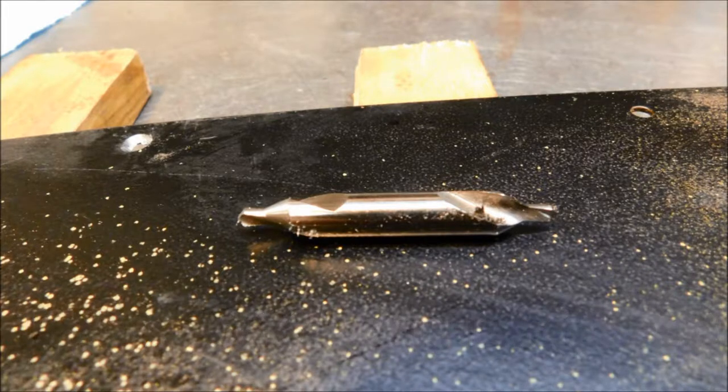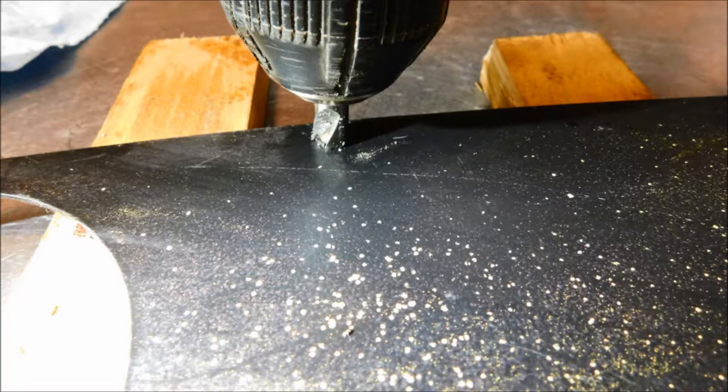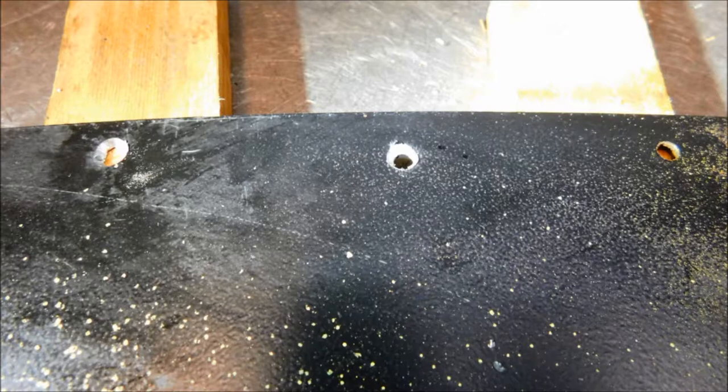Then I took a 1/8 by 5/16 countersink drill bit and with a cordless drill, drilled the holes, being careful to just drill through with the 1/8 inch part of the drill bit and bevel just enough with the tapered part of the bit so the wood screw will sit almost flush with the plate.